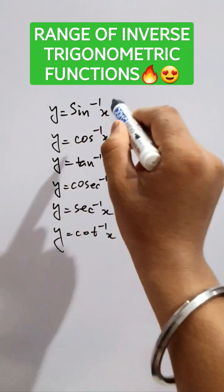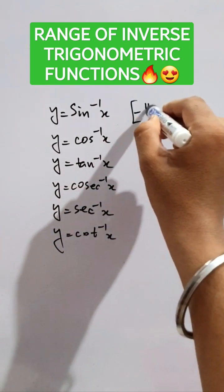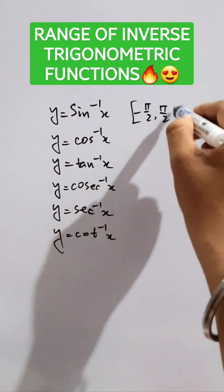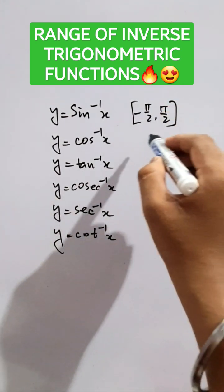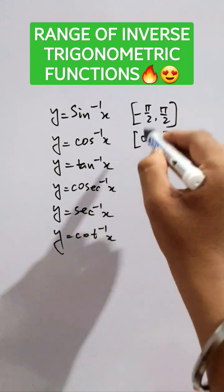So first of all, for the sine inverse case, the range will be closed minus pi by 2 to pi by 2 closed. This is the range. Now, for cos inverse x, it will be closed 0 to pi.